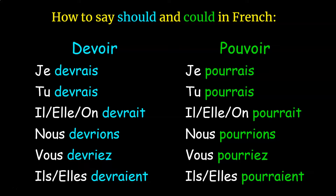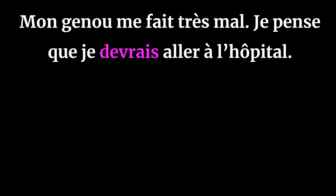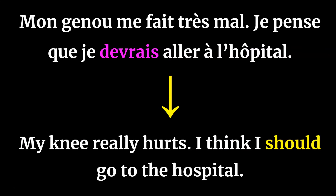To say I could, you could, etc. in French: je pourrais, tu pourrais, il/elle/on pourrait, nous pourrions, vous pourriez, and ils/elles pourraient. Some examples in action: mon genou me fait très mal, je pense que je devrais aller à l'hôpital — 'my knee really hurts, I think I should go to the hospital.'